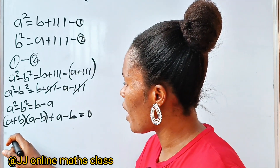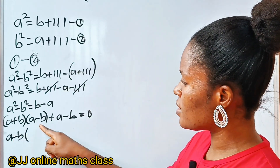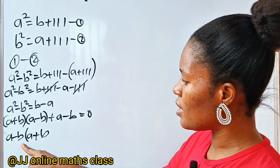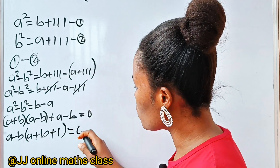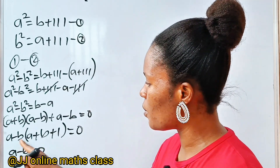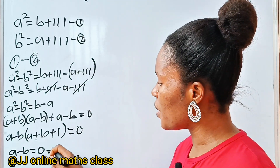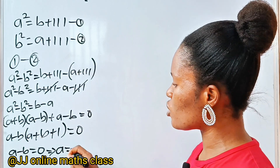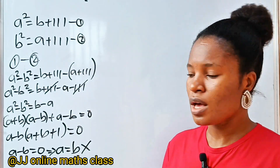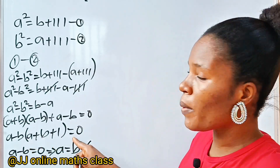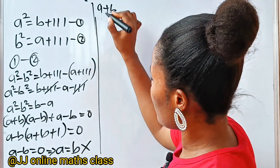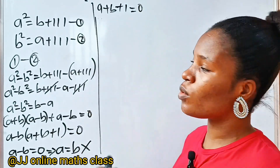If we factorize, we have (A minus B) open bracket: (A plus B) plus 1, is equal to 0. So we now have two cases. The first is A minus B equals 0. But when you solve this, A equals B, which contradicts the condition that A is not equal to B. So we discard this. The second equation is A plus B plus 1 equals 0, and this is the one we will work with.